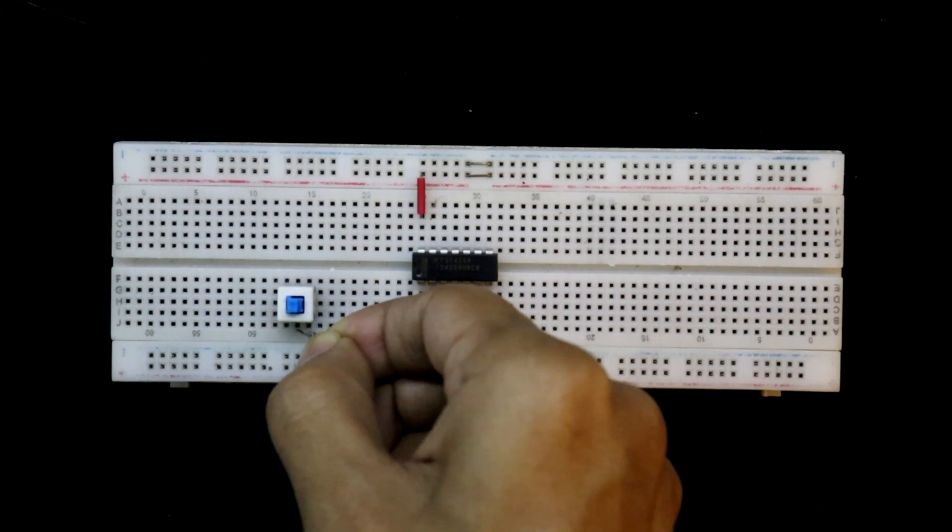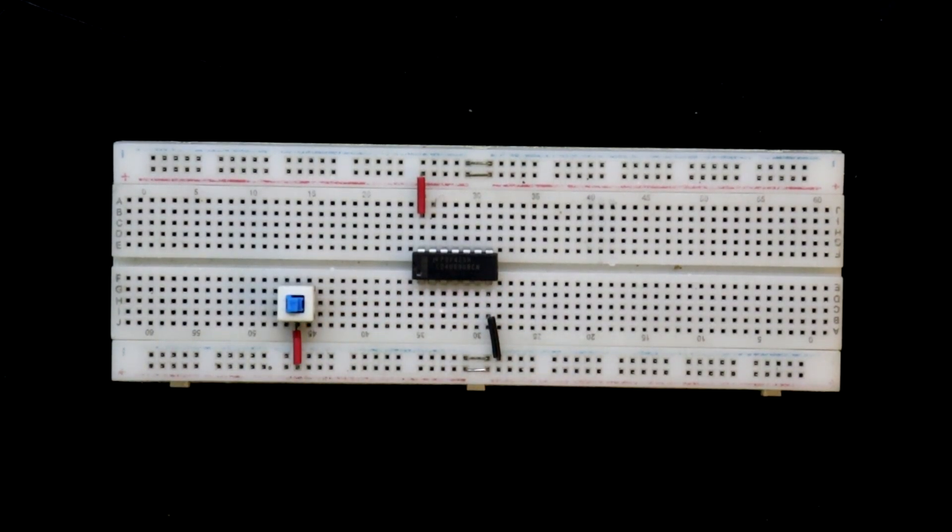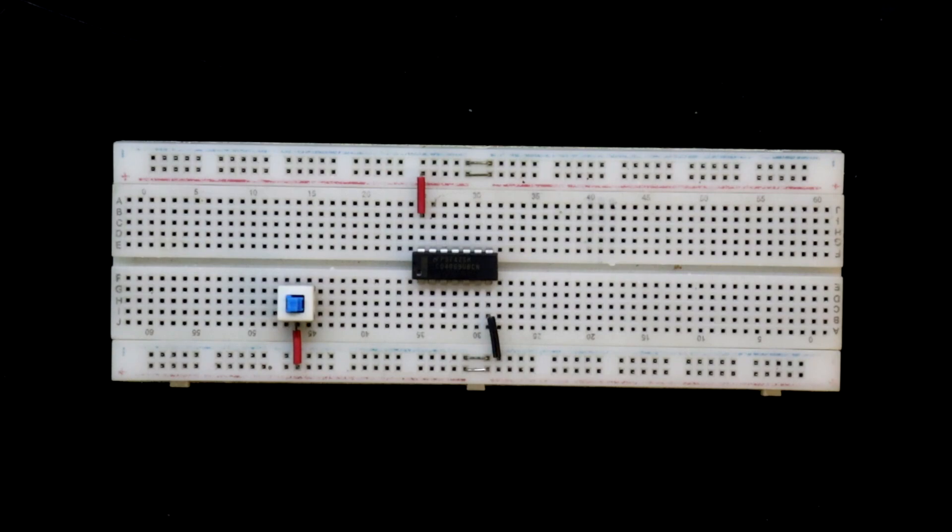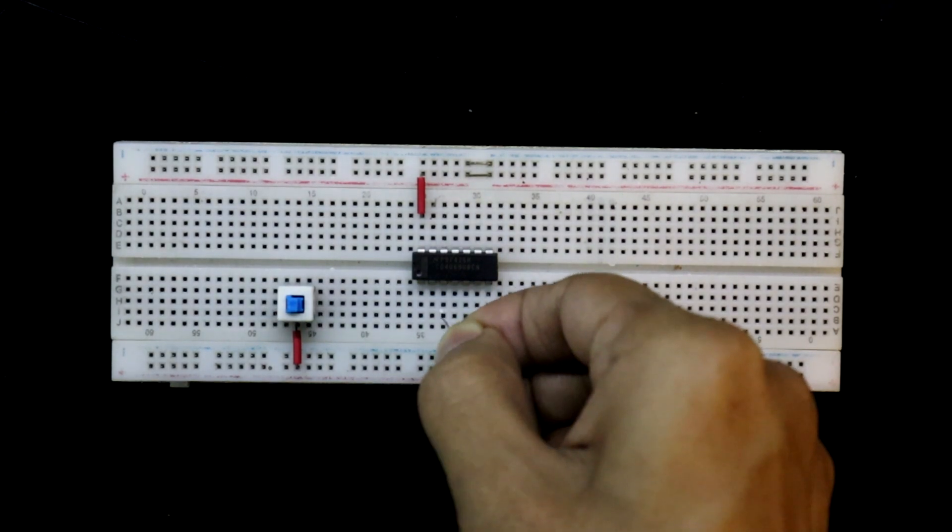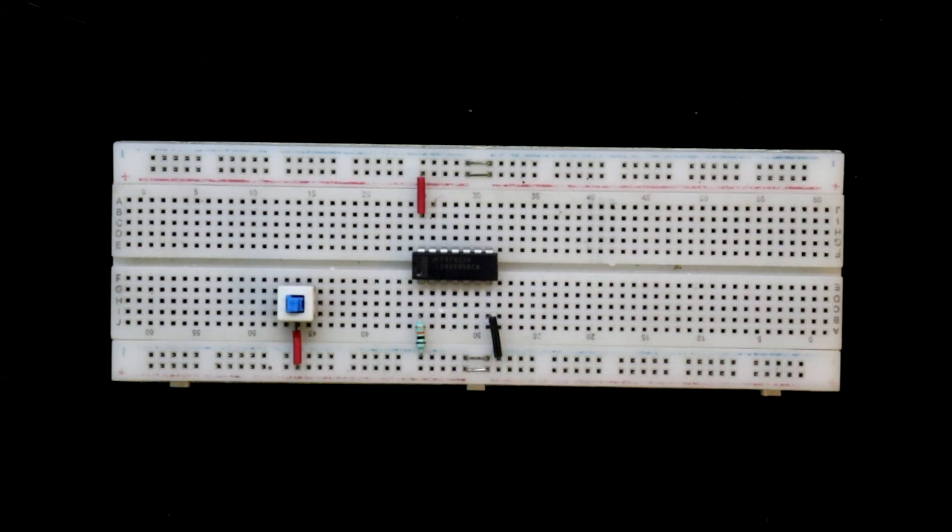One pin of the switch is connected to the positive rail. As pin number 1 is input, so with this we have to connect pull-down resistor. It is 10 kilo ohms.